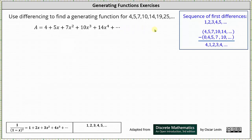Next, we multiply both sides of this equation by x and then subtract. Multiplying by x will shift all the terms to the right one position, and then when we subtract, we should get the series that will give us the sequence 4, 1, 2, 3, 4, 5, and so on.